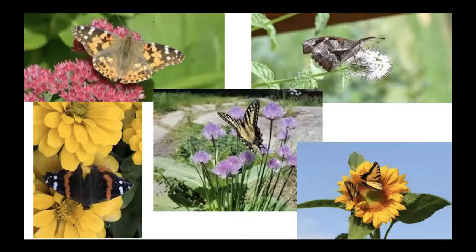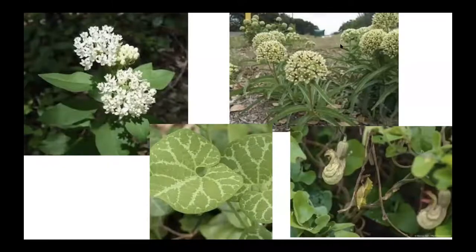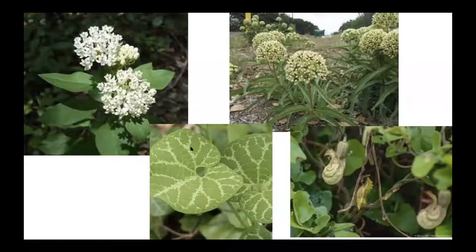So here are some common butterflies: the painted lady, the tiger swallowtail with stripes going vertically, and the snout butterfly. Butterflies lay their eggs on one kind of plant or family. The monarch lays on milkweed. We have two native milkweeds in this part of Texas — the antelope horn and the green milkweed — which you may see by the side of the road. Here's another native plant that butterflies use: the pipe vine, with that weird flower like a pipe.